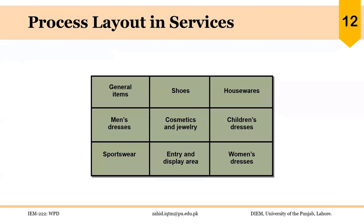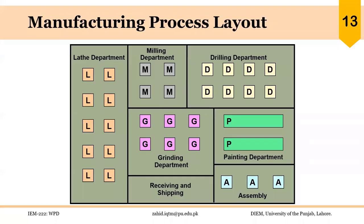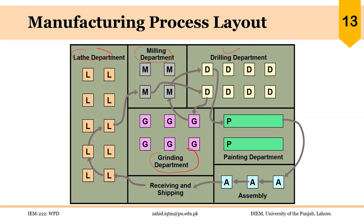Workers' load also fluctuates — sometimes they may be over-utilized and in other periods under-utilized. An example of a process layout in a service organization is a department store where similar products are displayed together. In manufacturing, lathes are grouped together, milling machines are grouped together, drilling is grouped together, grinding and so on. The flow of one product is shown, while another product may have a slightly different flow and may spend a different amount of time at each stage.